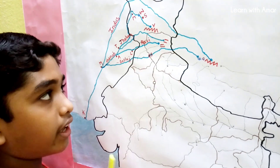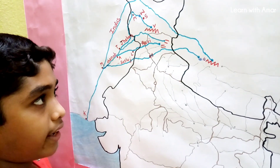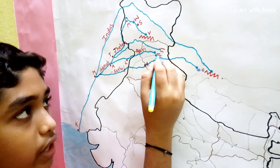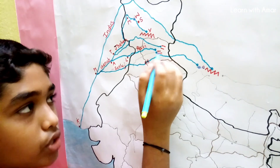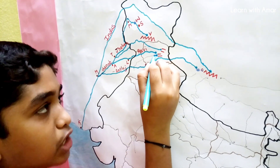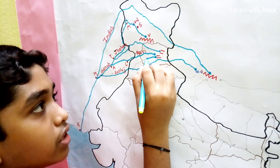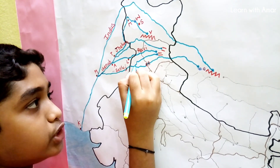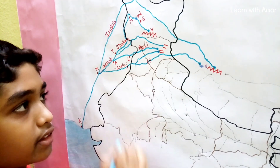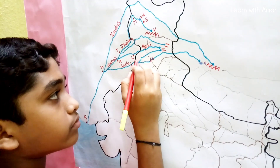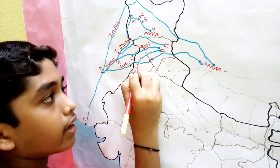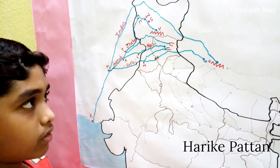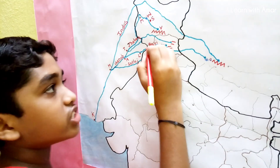The next river is Beas. Its source is Rohtang Pass in Himachal Pradesh. It flows through Himachal Pradesh and Punjab, and joins the Sutlej near Harike Patan.